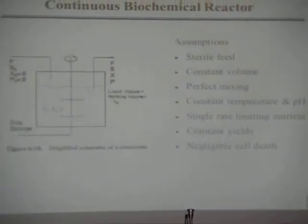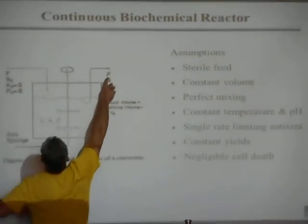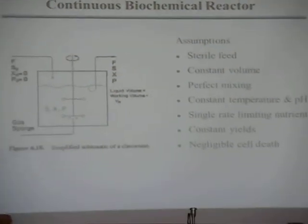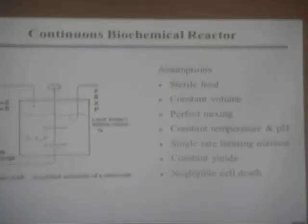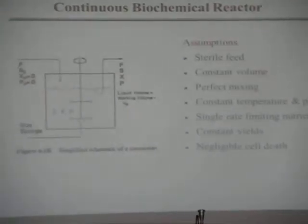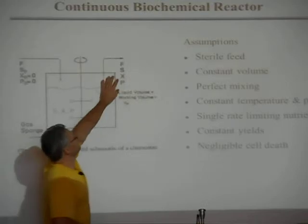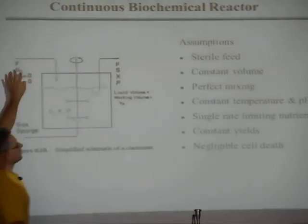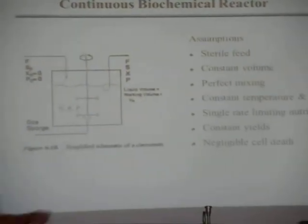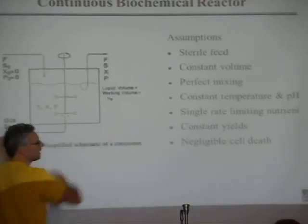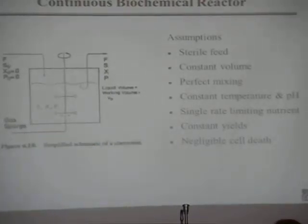Then we're going to withdraw a stream continuously, and some flow rate will be the same as the flow rate going in typically. So it will be constant volume operation. It will have some amount of the substrate, less than you put in because it should have been consumed, and we will have made some cells and hopefully some of the product.